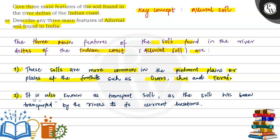The second point: alluvial soil is also known as the transported soil, as the soil has been transported by the rivers to its current location.